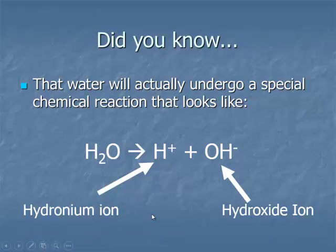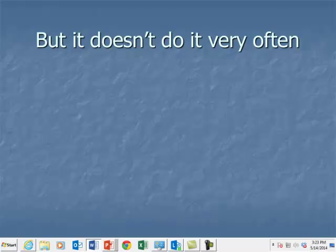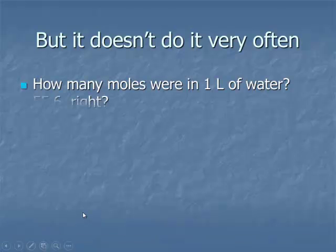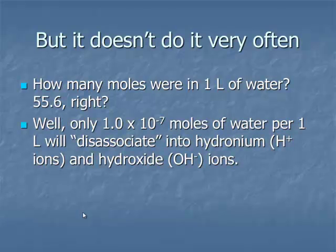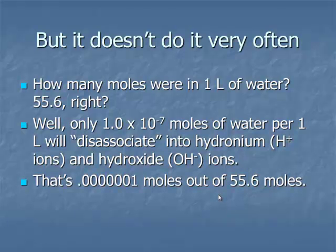This is the basis of why we created the pH scale. The self-ionization of water does not happen very often. Only 1.0 × 10^-7 moles of water per liter will disassociate or self-ionize to form hydronium ions and hydroxide ions. That's 0.0001 moles out of 55.6 moles of water that will actually self-ionize.